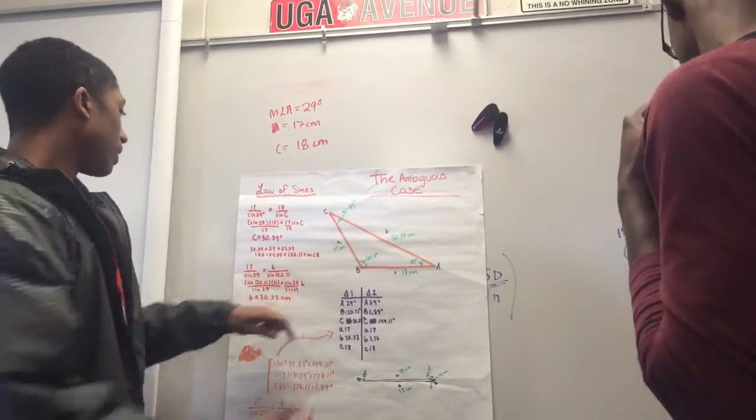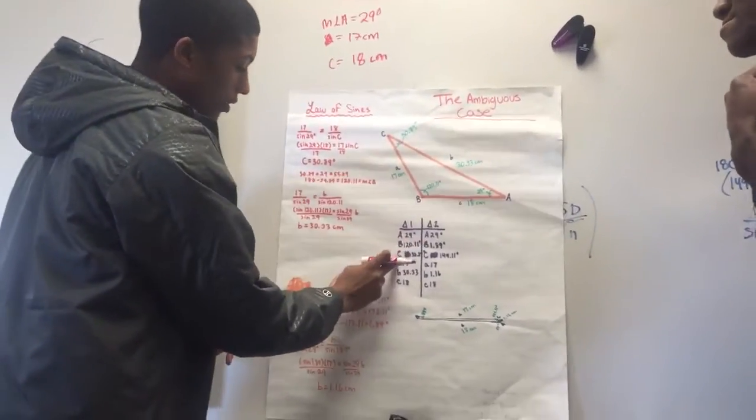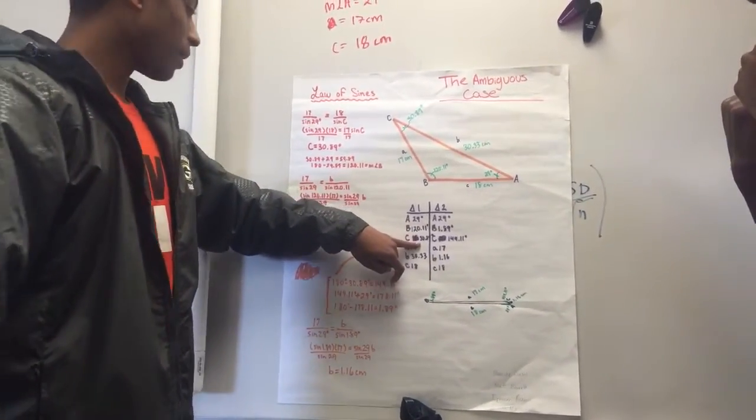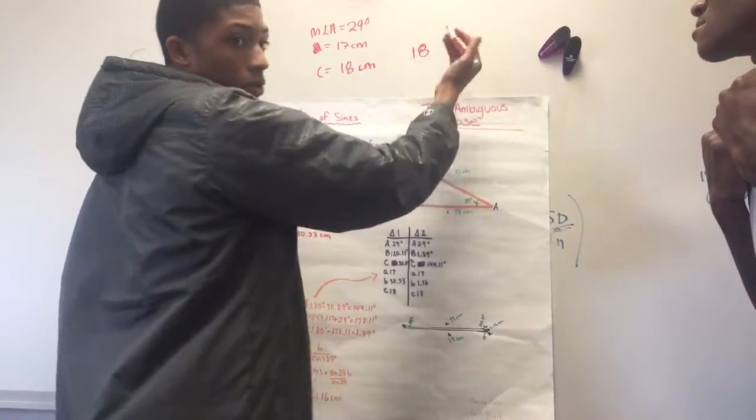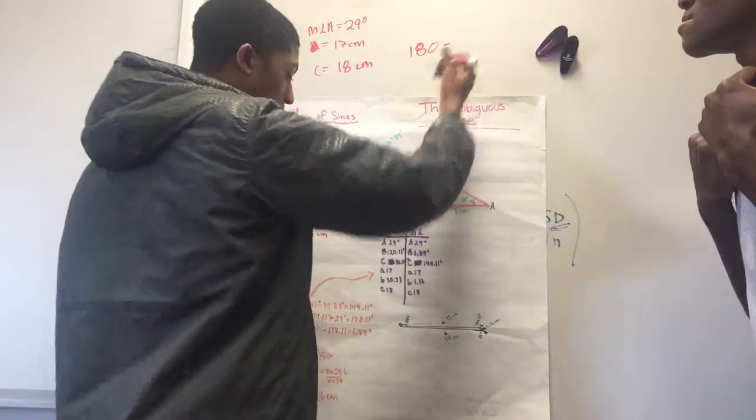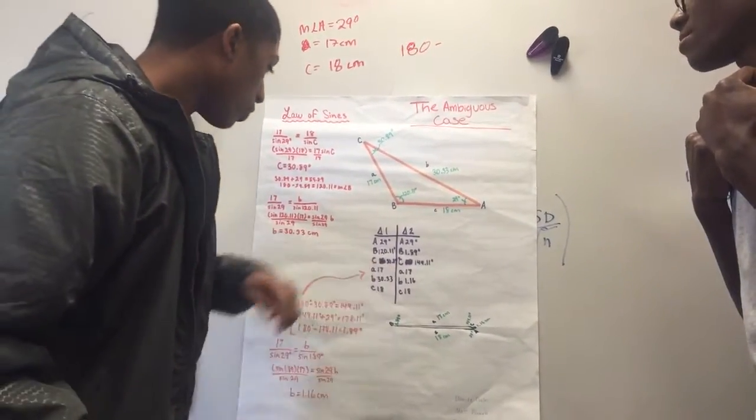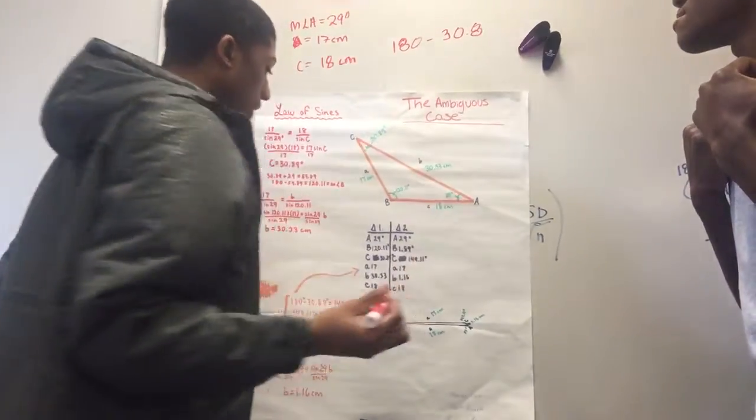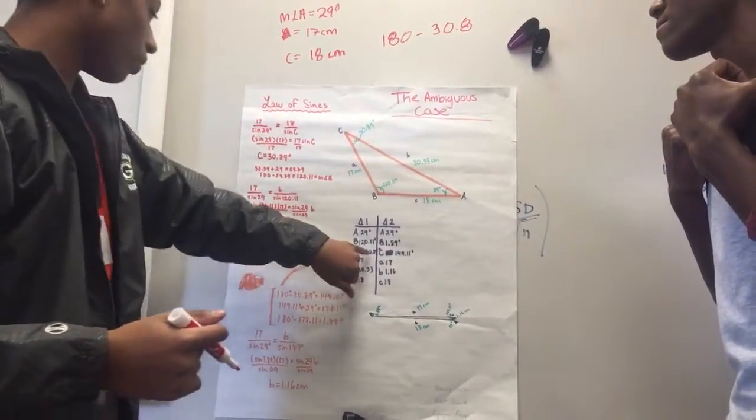So now, I've solved for the first triangle and found angle A, B, and C. However, the first thing I did was solve for angle C. So now, you do 180 degrees, which is how many degrees in a triangle, subtracted by the angle we found, which was 30.8. And that will give us 120.11.